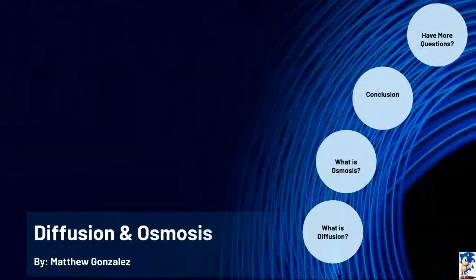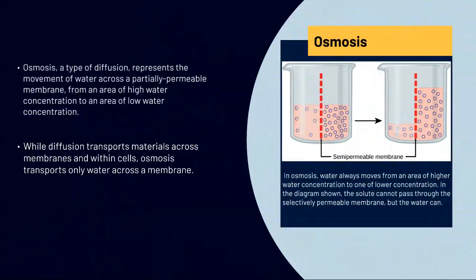Next, we will talk about what is osmosis. So osmosis is a type of diffusion. It represents the movement of water across a partially permeable membrane from an area of high water concentration to an area of low water concentration.